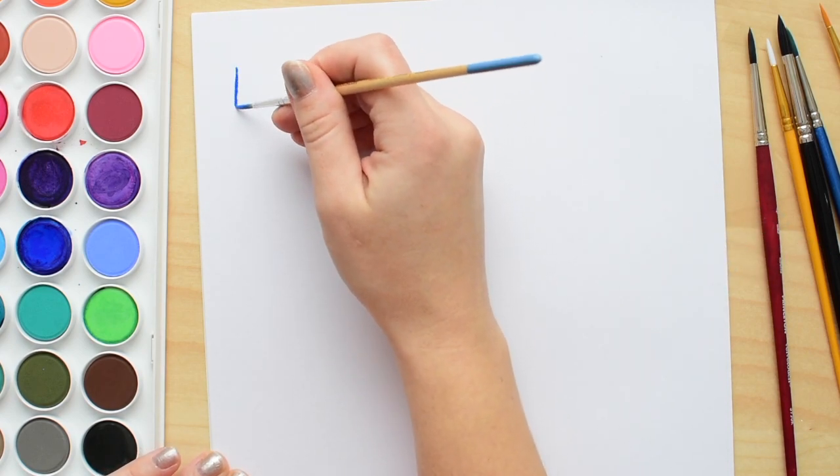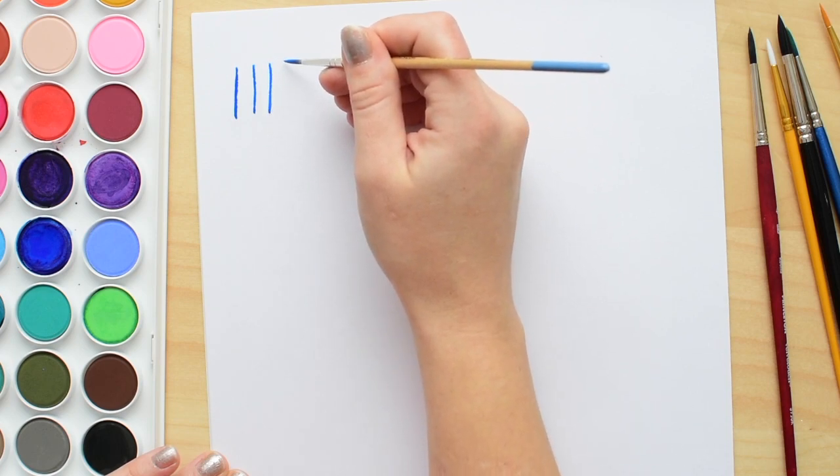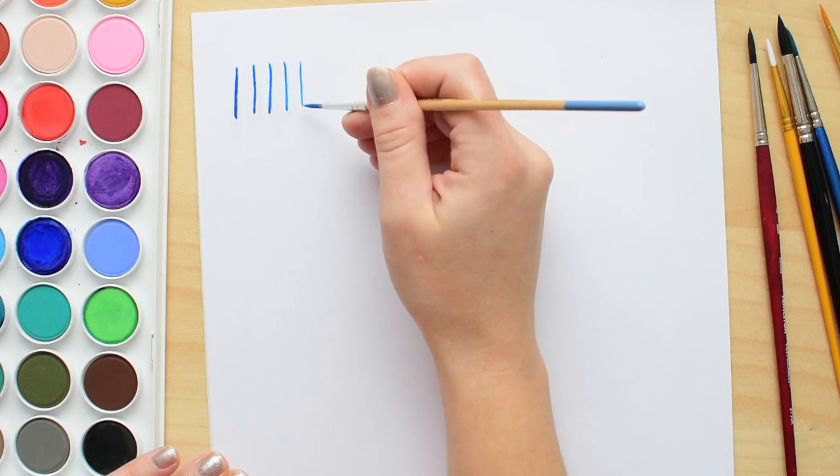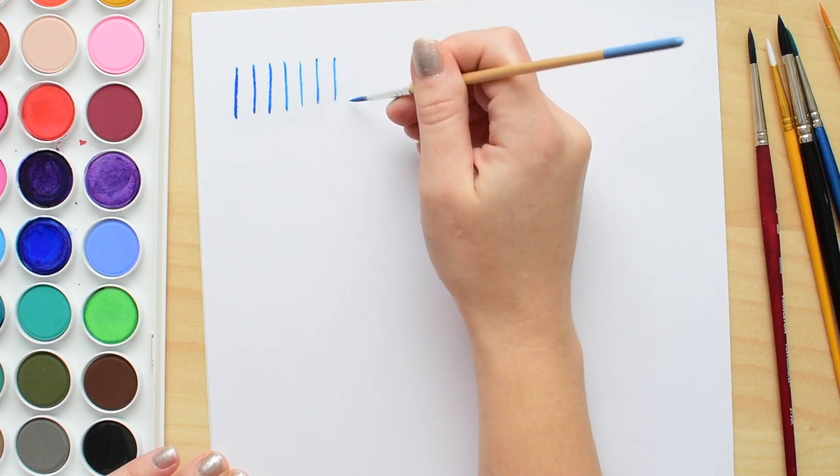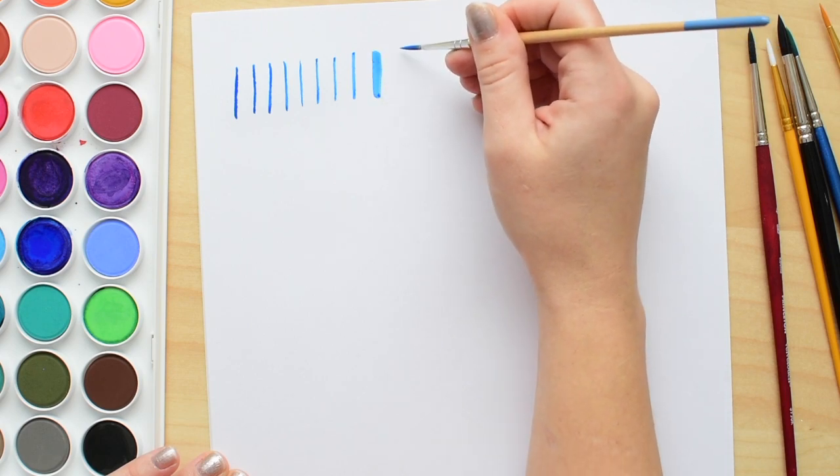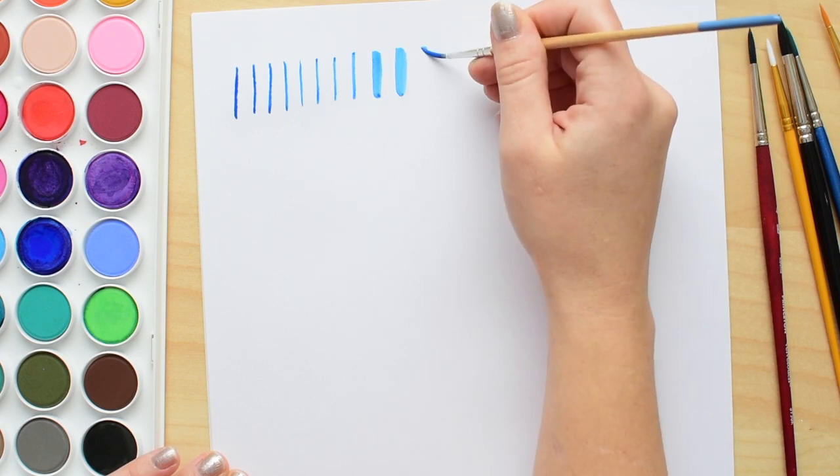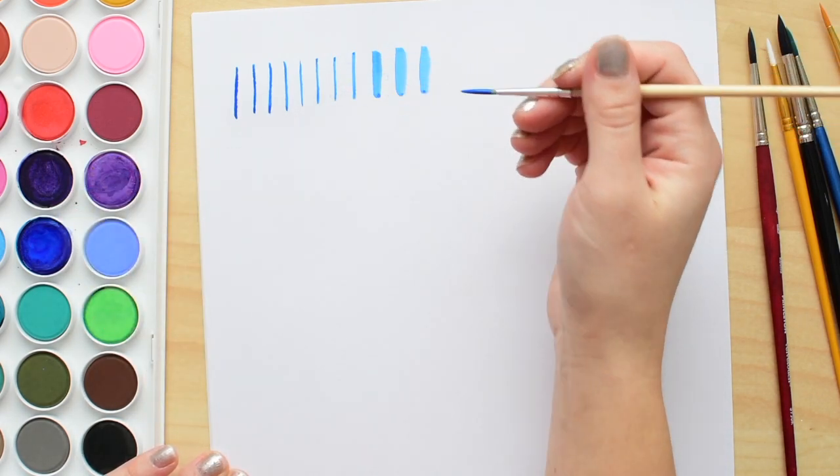So just make some lines, press very lightly, make some down strokes, make some up strokes. You can make them thicker by pressing a little bit harder, and just kind of get the feel of the brush.